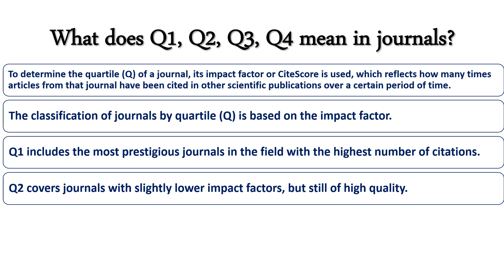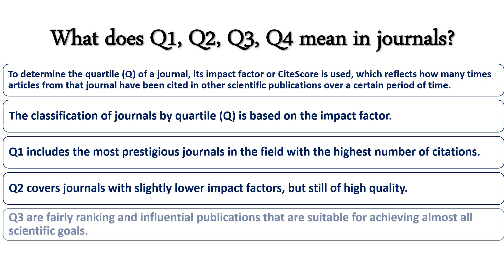Q2 journals represent the middle range — roughly the 50th to 75th percentile — in terms of citation impact. They are not as highly cited as Q1 journals but are still well regarded and have substantial influence within the same category. Q3 journals have lower citation impact compared to Q1 and Q2, representing the next 25 percent — roughly the 50th to 75th percentile from the bottom.